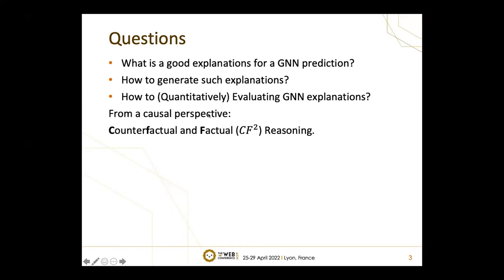In this paper, we basically try to answer the following three questions. The first one is: what explanations are considered good explanations for GNN predictions, especially considering that in most cases, nobody knows the real ground truth explanations. The second question is about the method to generate such explanations. And the third question is: for the generated explanations, how could we quantitatively evaluate them and compare between different methods, especially without ground truth data?